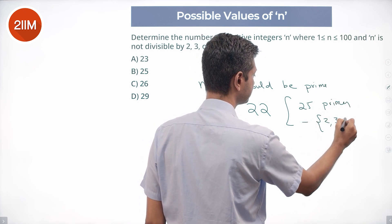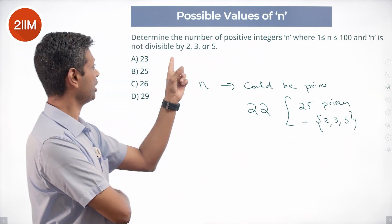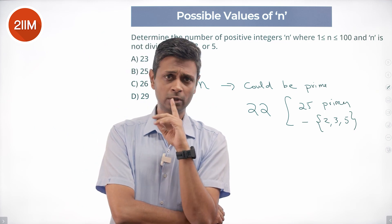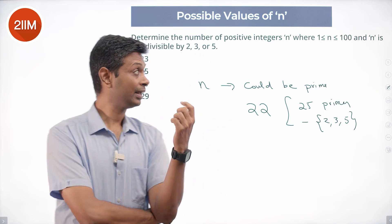N could be prime. 22 numbers on this list. 25 primes minus 2, 3, and 5. All of these numbers will get counted. N is a prime not equal to 2, 3, or 5 will get counted. So 22 numbers in this list. After that, they are looking for numbers less than or equal to 100.